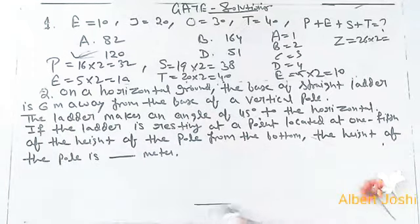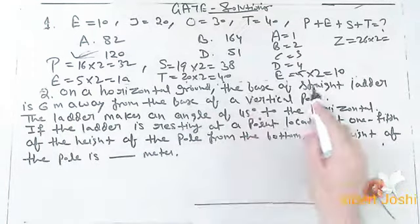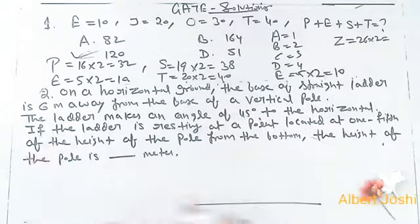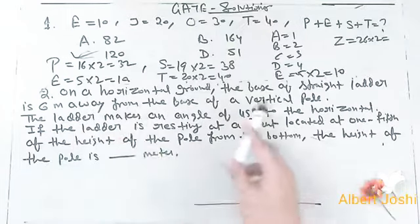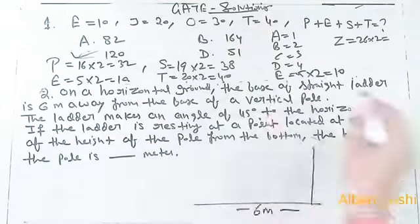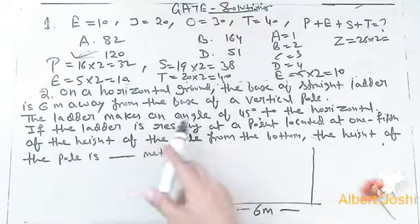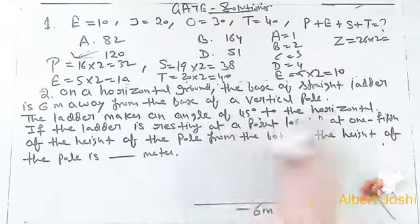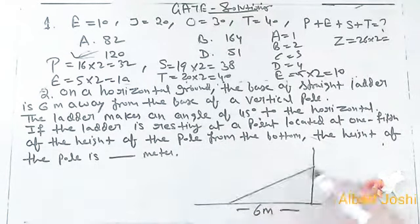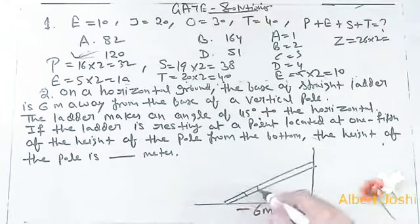The second question: On a horizontal ground, the base of a straight ladder is 6 meters away from the base of a vertical pole. The ladder makes an angle of 45 degrees to the horizontal.